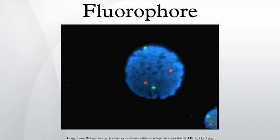Fluorophore molecules could be either utilized alone or serve as a fluorescent motif of a functional system. Based on molecular complexity and synthetic methods, fluorophore molecules could be generally classified into four categories: proteins and peptides, small organic compounds, synthetic oligomers and polymers, and multi-component systems.